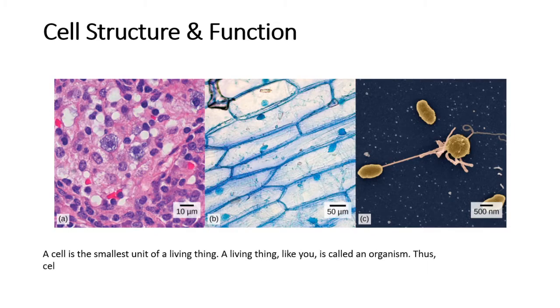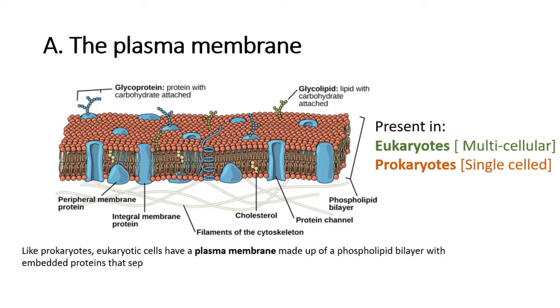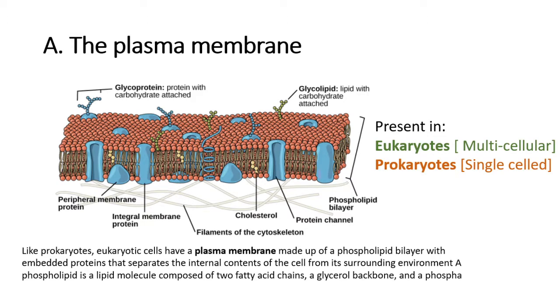Like prokaryotes, eukaryotic cells have a plasma membrane made up of a phospholipid bilayer with embedded proteins that separates the internal contents of the cell from its surrounding environment. A phospholipid is a lipid molecule composed of two fatty acid chains, a glycerol backbone, and a phosphate group. The plasma membrane regulates the passage of some substances such as organic molecules, ions, and water.